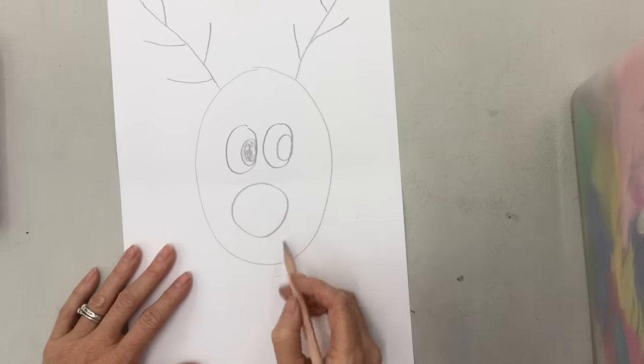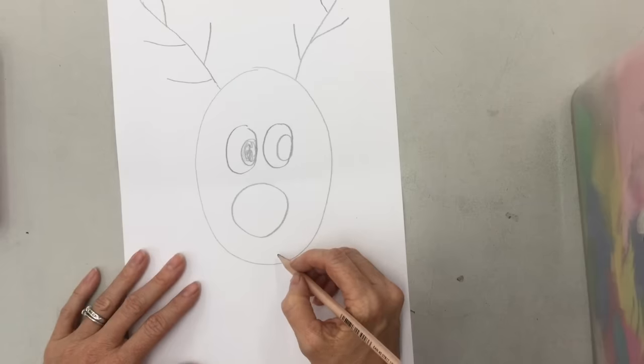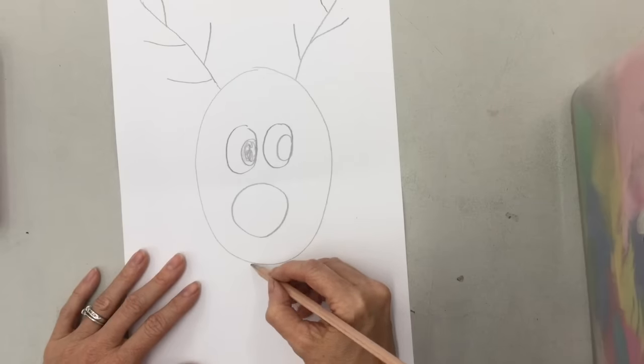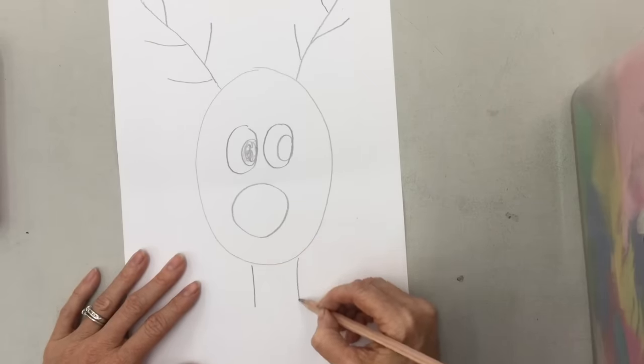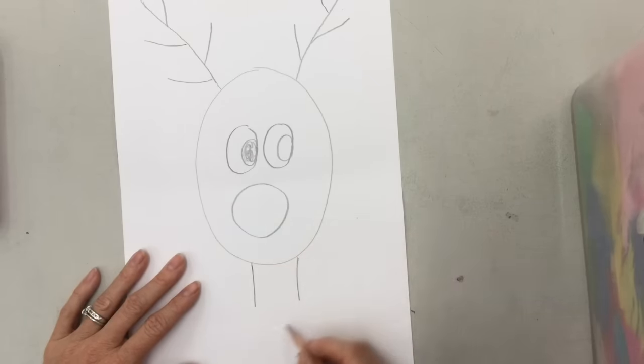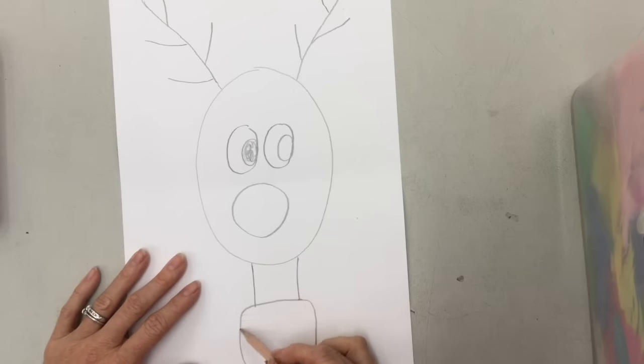And then now he needs a neck. There's two lines there for his neck. Now it's cold out, he's in the North Pole, so we're going to make a nice big scarf around his neck. Kind of a box, it's kind of a square but with rounded edges. And that's how we're going to make his scarf.